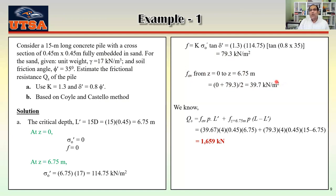After 6.75 m, friction is constant, so average friction equals the friction at 6.75 m, which is 79.3 kN/m². Plugging all values in — the first part up to 15D and then from 15D to the rest of the pile — we get Qs equal to 1659 kN. Now let's find the frictional resistance using the Coelho and Castillo method.